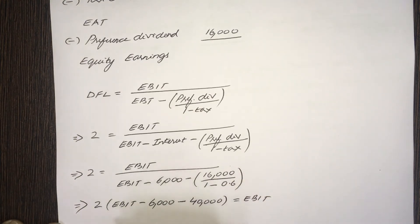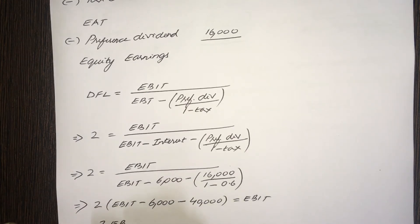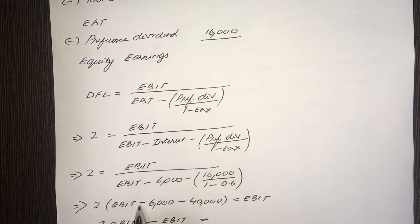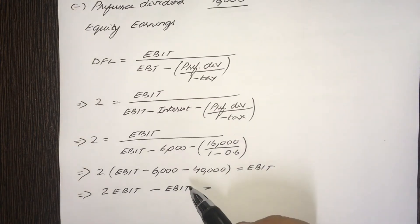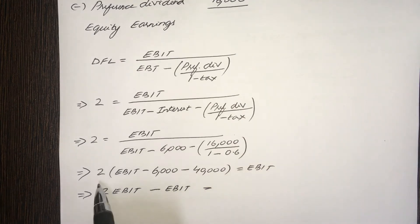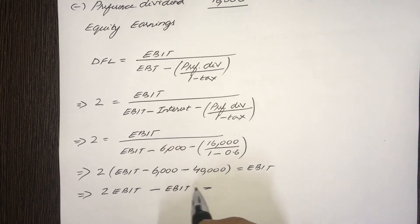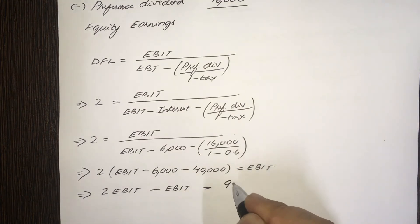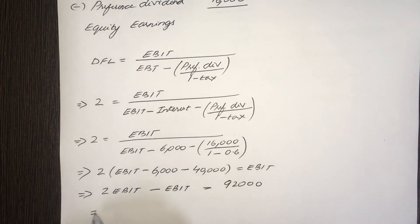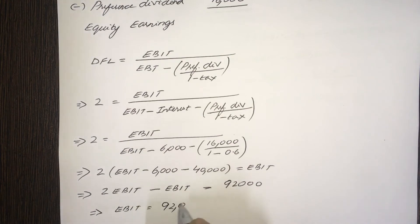So: 2 × (EBIT minus 6,000 minus 40,000) = EBIT. Expanding: 2 EBIT minus 92,000 = EBIT. Bringing EBIT to the other side: EBIT = 92,000. So there we have it — EBIT is 92,000.